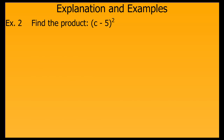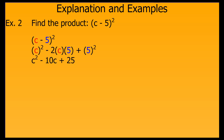Let's try another one. This time notice that it's c minus 5, not plus, quantity squared. So I take c squared minus 2 times c times 5 plus 5 squared, which gives me c squared minus 10c plus 25. Notice that you don't have to write out the intermediate steps if you don't need to — if you can double 5 in your head, you can go straight to c squared minus 10c plus 25.